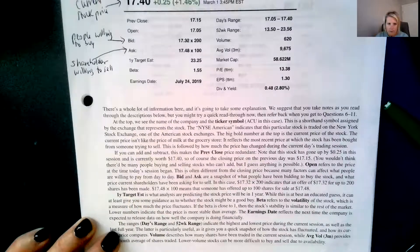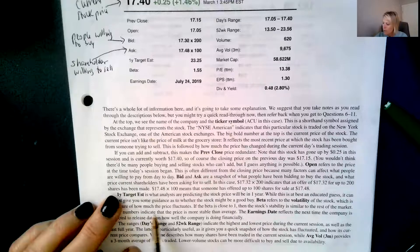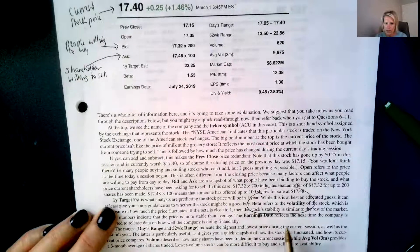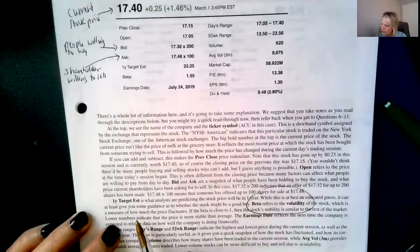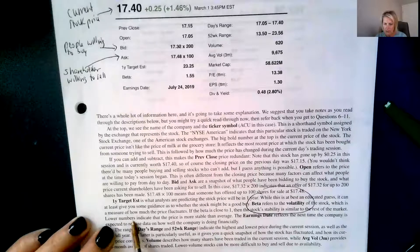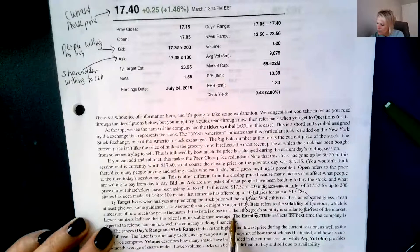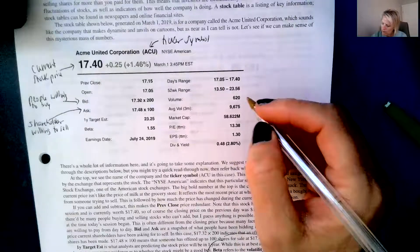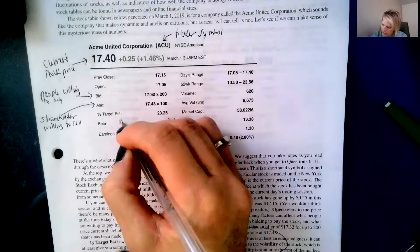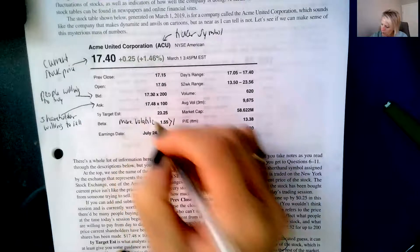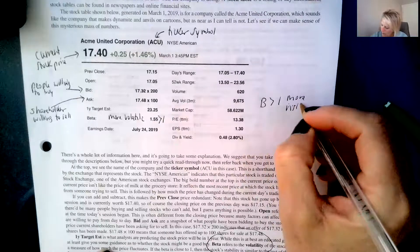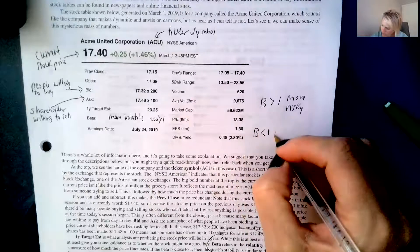So the one year target estimate is what analysts are predicting the stock price will be in one year. Beta is important, circling this. Beta refers to the volatility of the stock, which is a measure of how much the price fluctuates. If the beta is close to one, then the stock's volatility is similar to the rest of the market. Lower numbers indicate that the price is more stable than average. So the beta right here is bigger than one so it's more volatile. Beta bigger than one, more risky. Beta less than one, more stable.